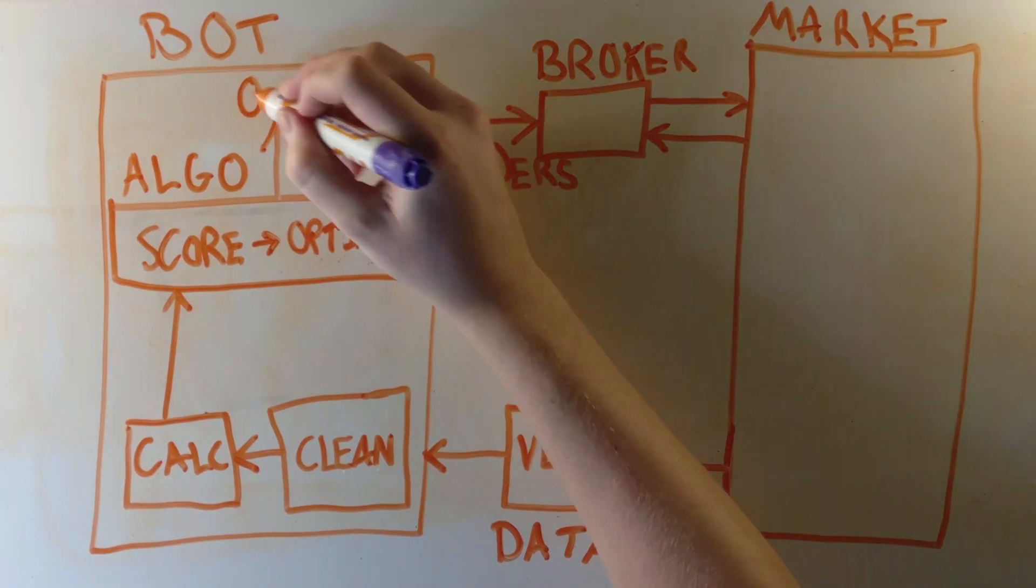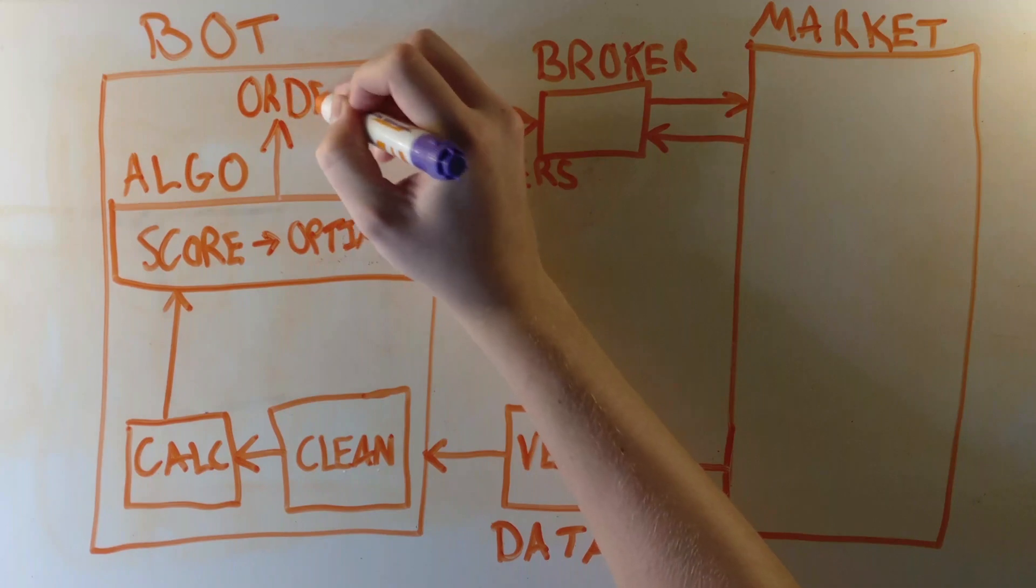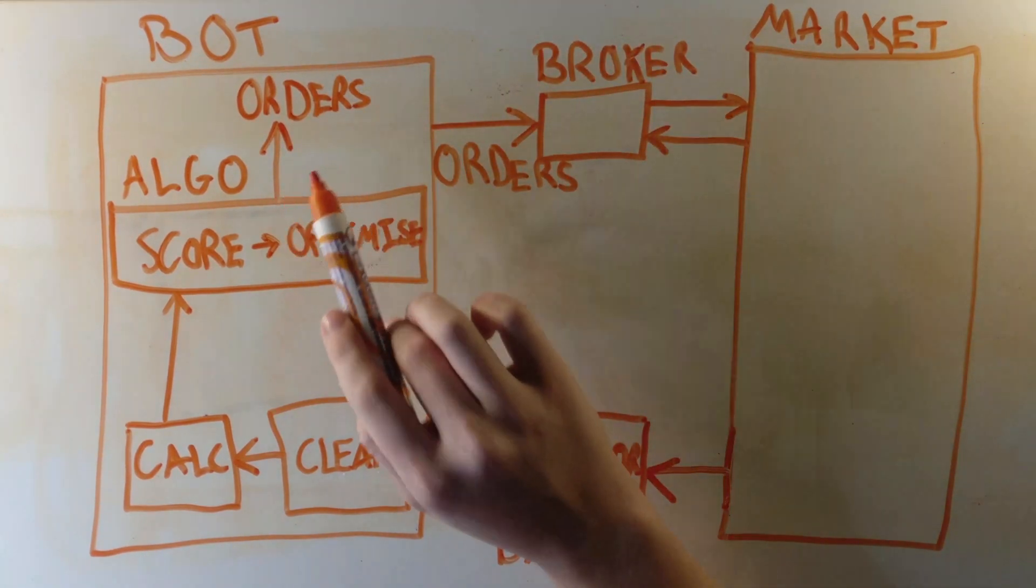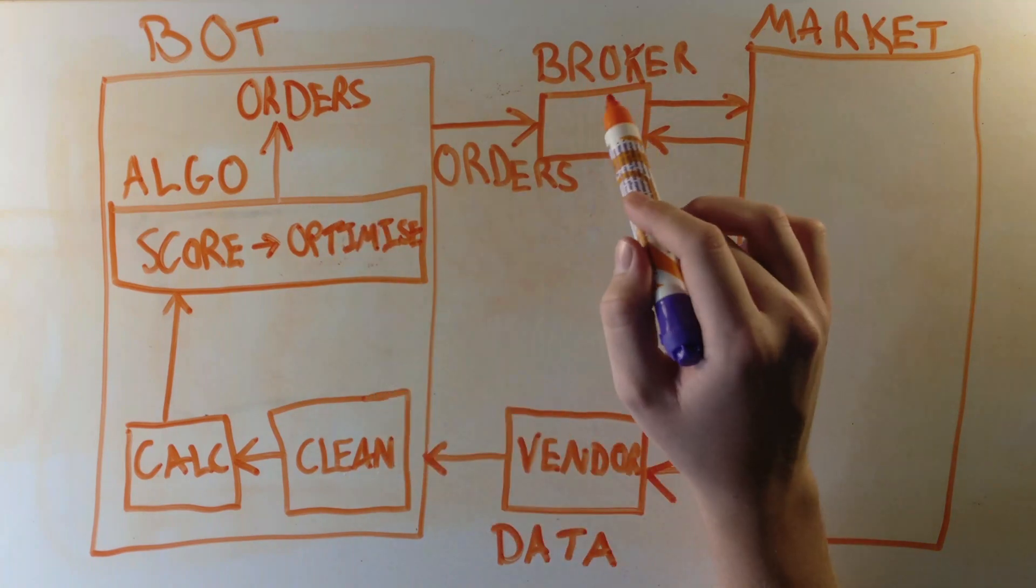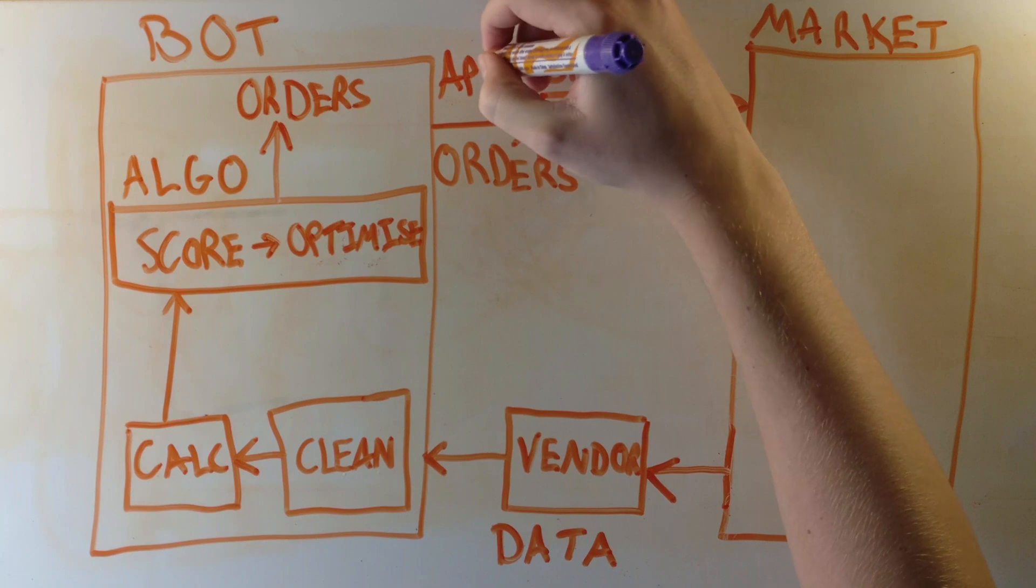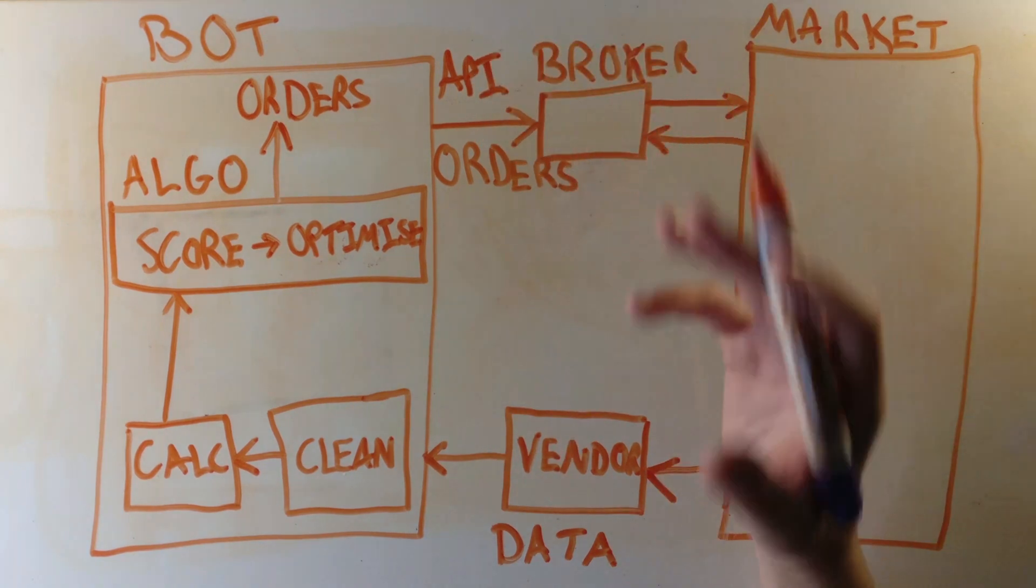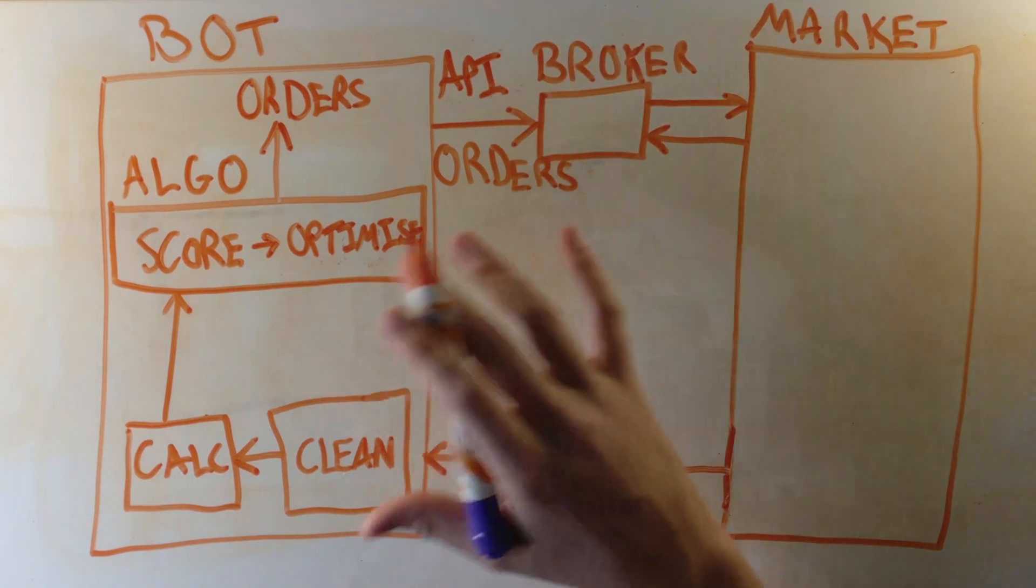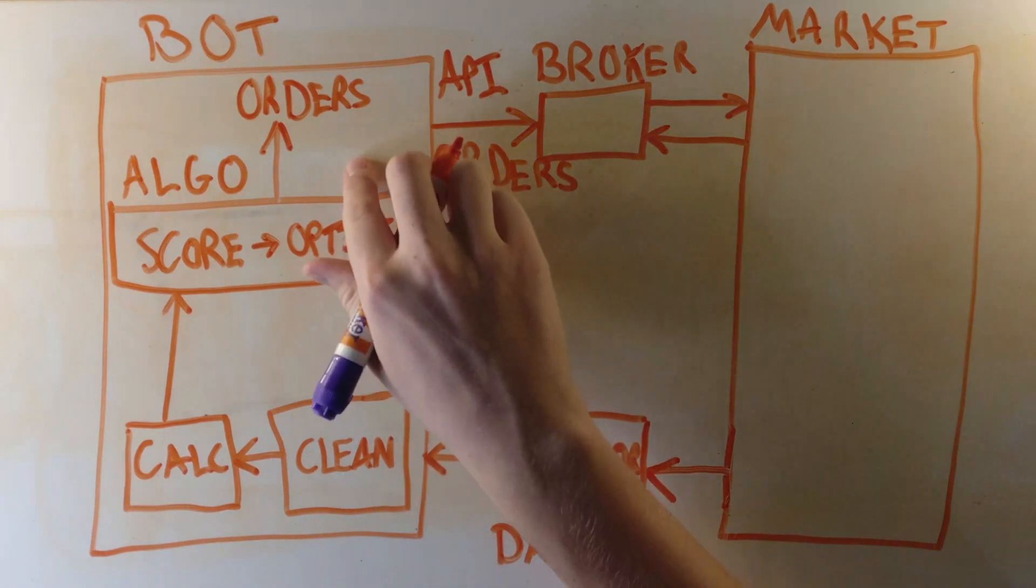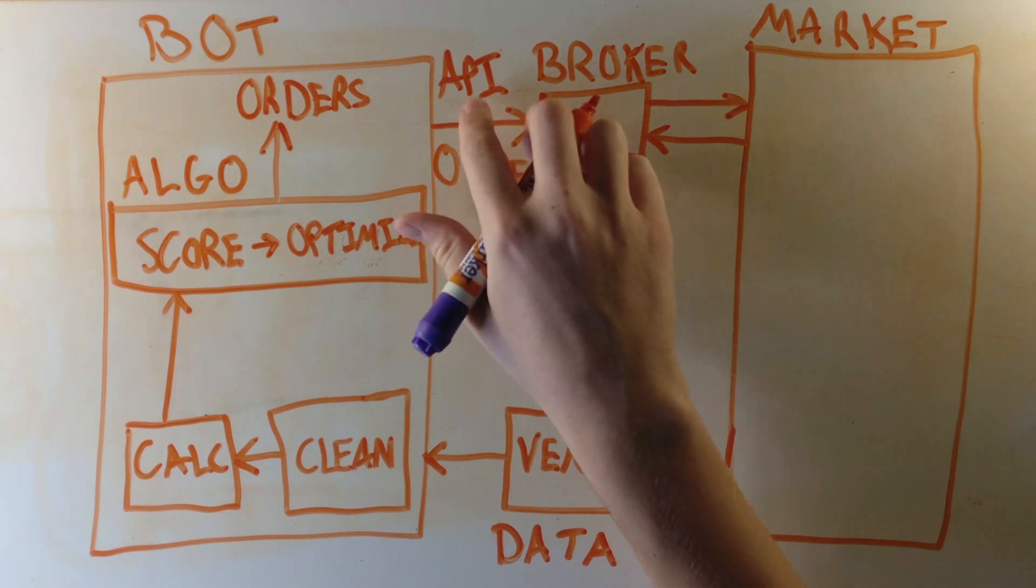Our algorithm has now produced the buy and sell orders to reach our optimal portfolio, and now the bot has to communicate these orders to the broker. It does this via something called an API. An API is a way for two programs to communicate with each other. So our bot is going to send orders to the broker via this API.